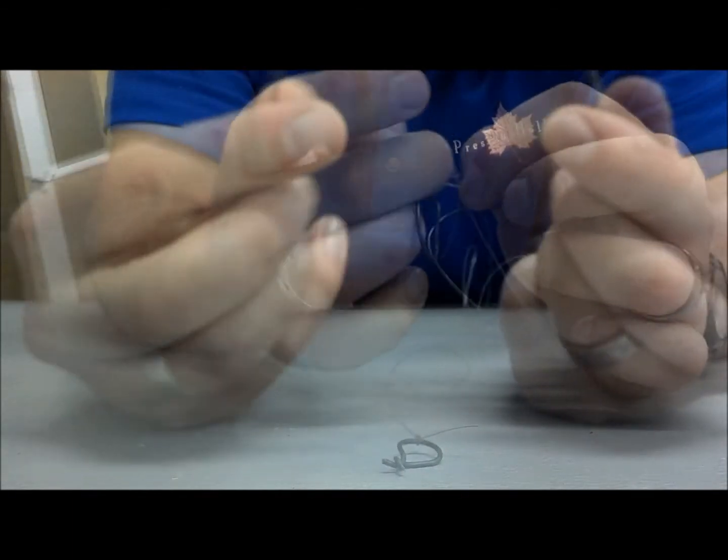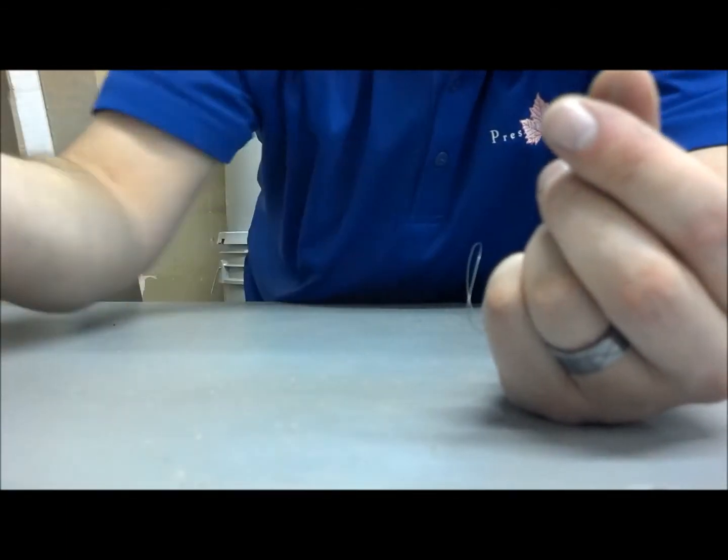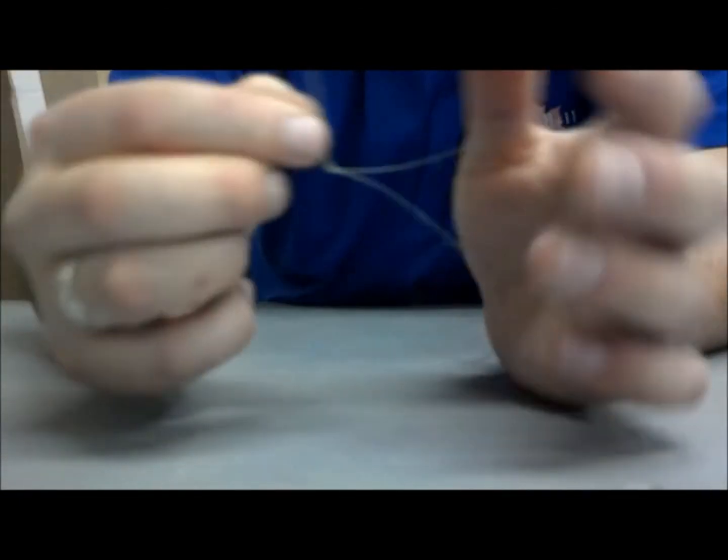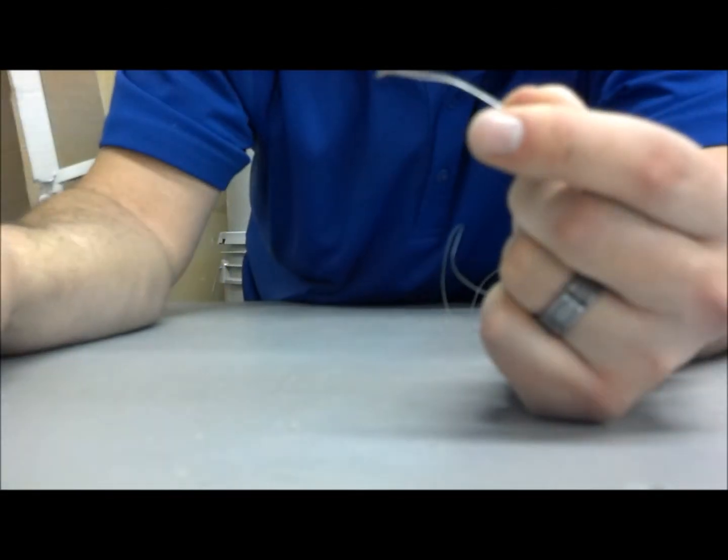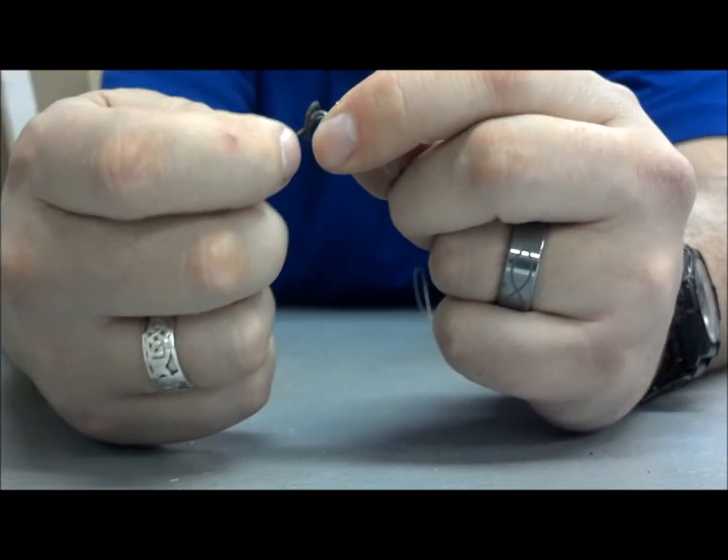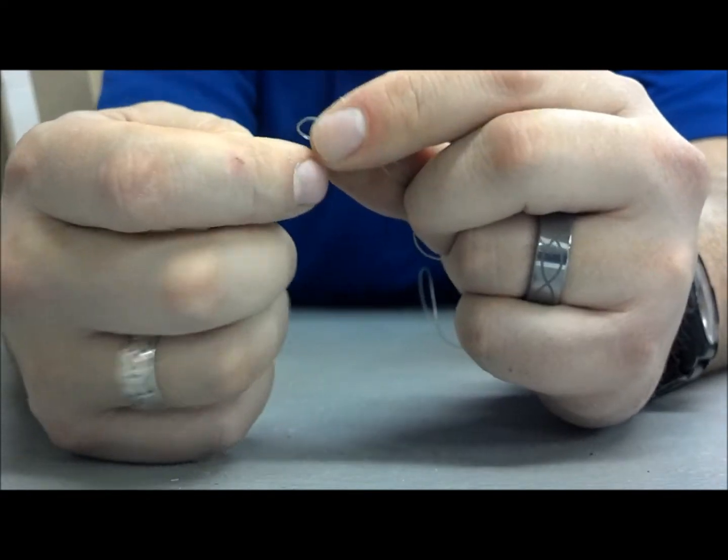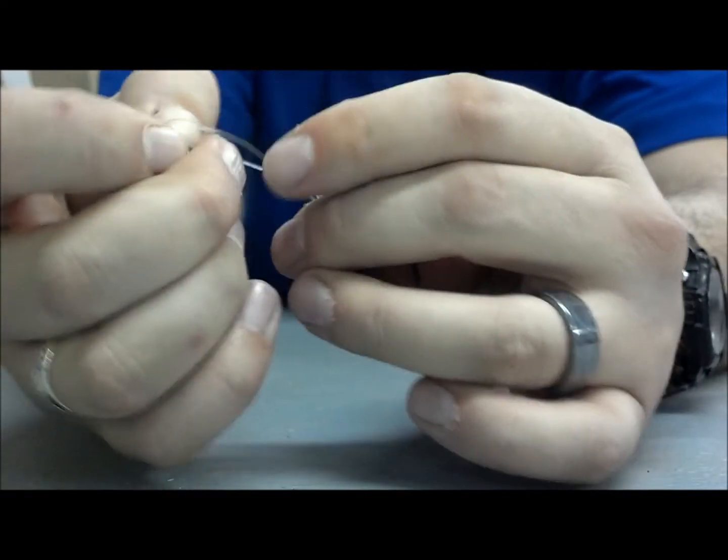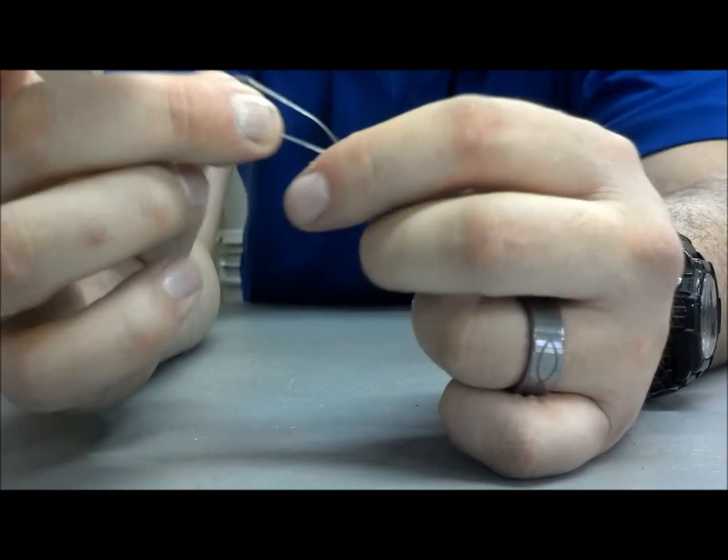Okay, so discard the bad hook and you still have this loop. Grab your new hook, same thing, and you grab the end of your leader.